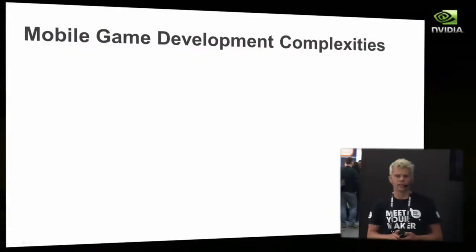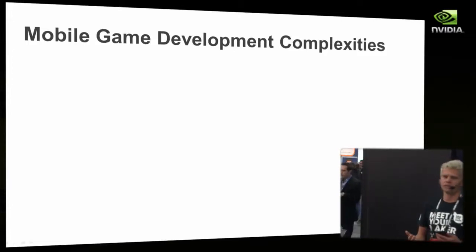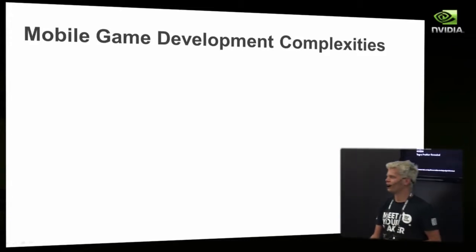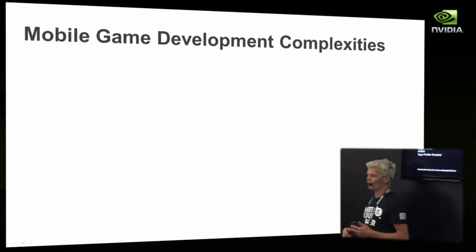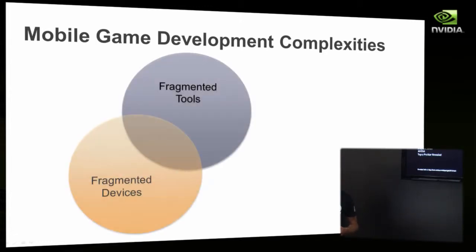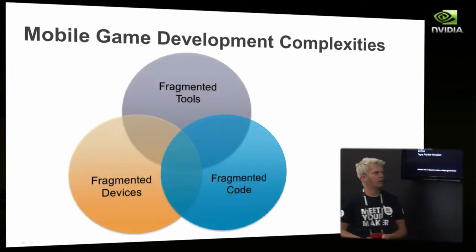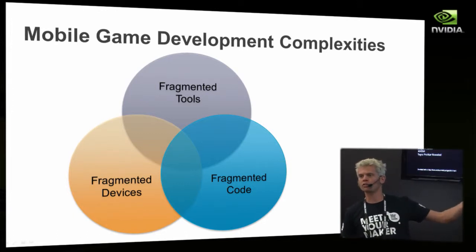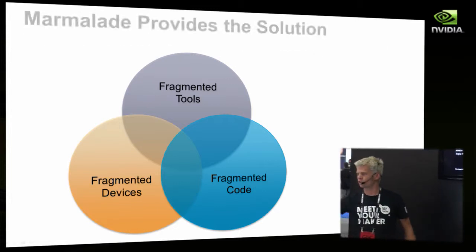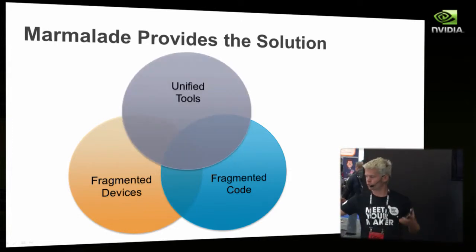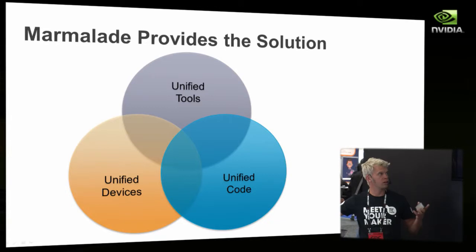So why do we need Marmalade? It's a complex world. We've been in the industry for over 10 years, and we've identified some of the core problems, which basically come down to fragmentation — fragmented tools, fragmented devices, which results in fragmented code. Marmalade tries to address that. We've spent the last five years coming up with a solution that involves unifying the tools, devices, and code for you.